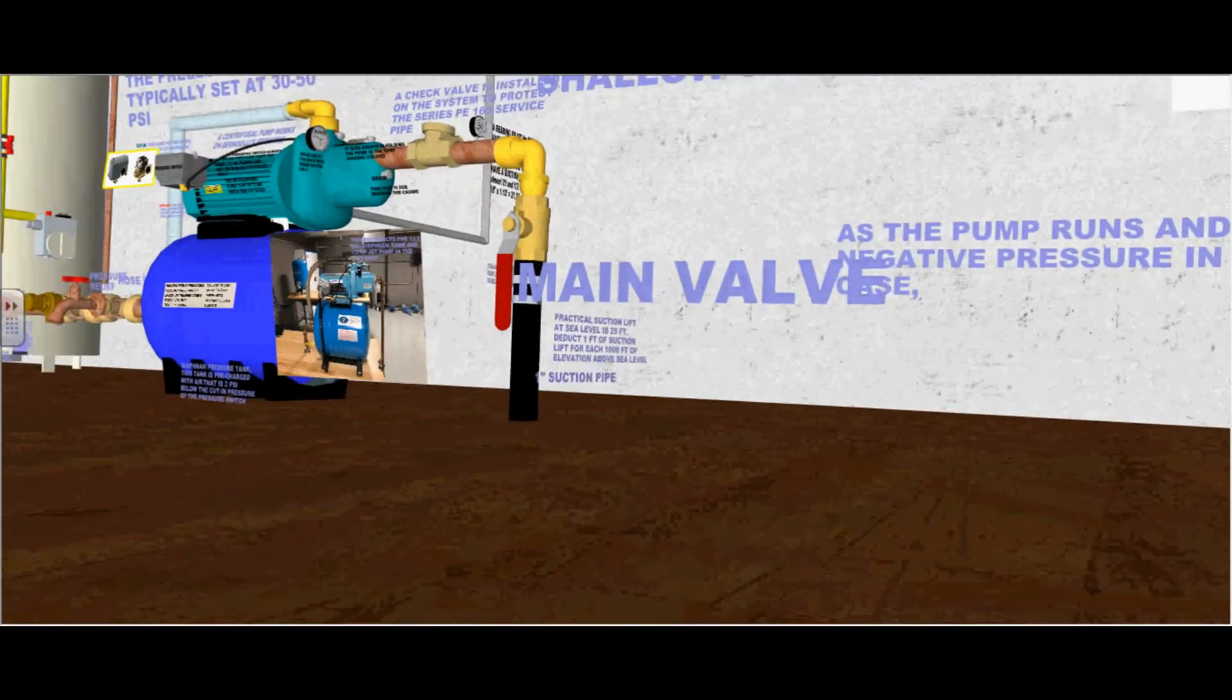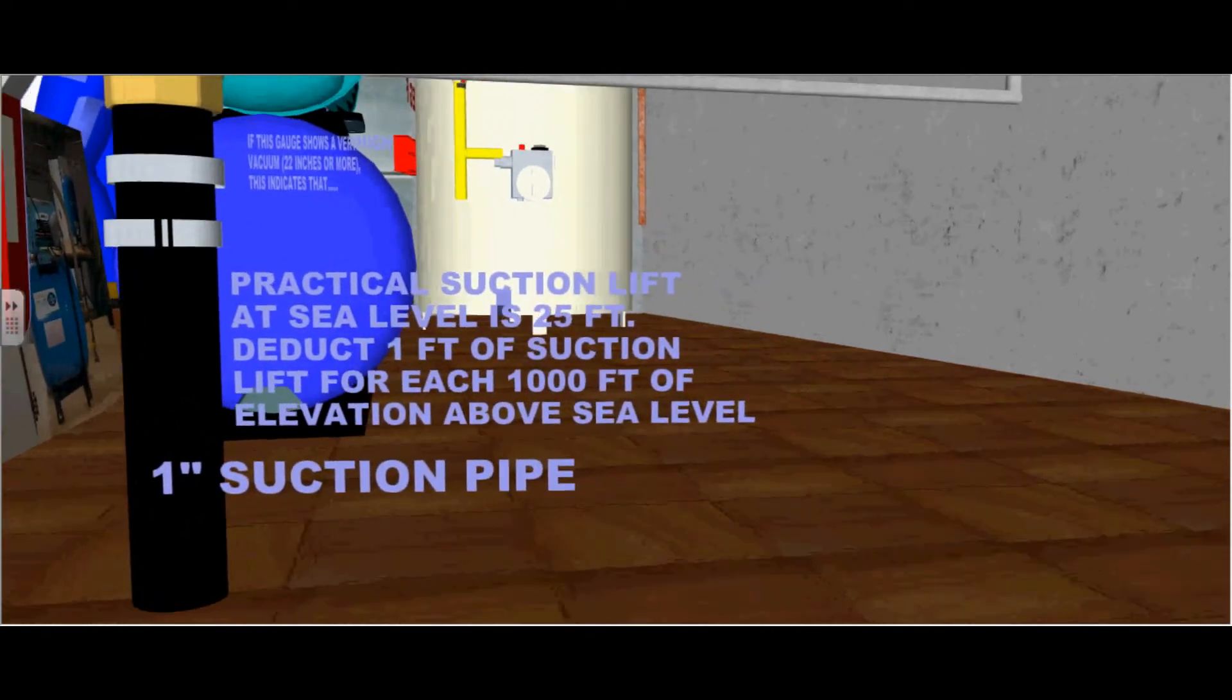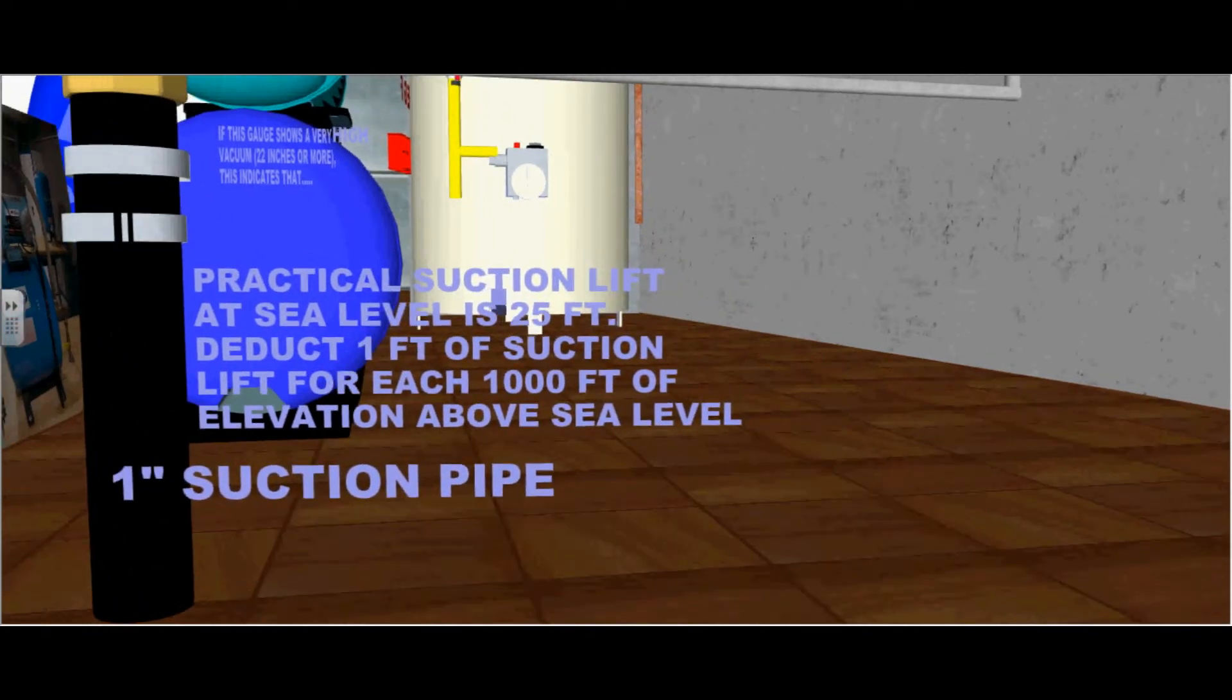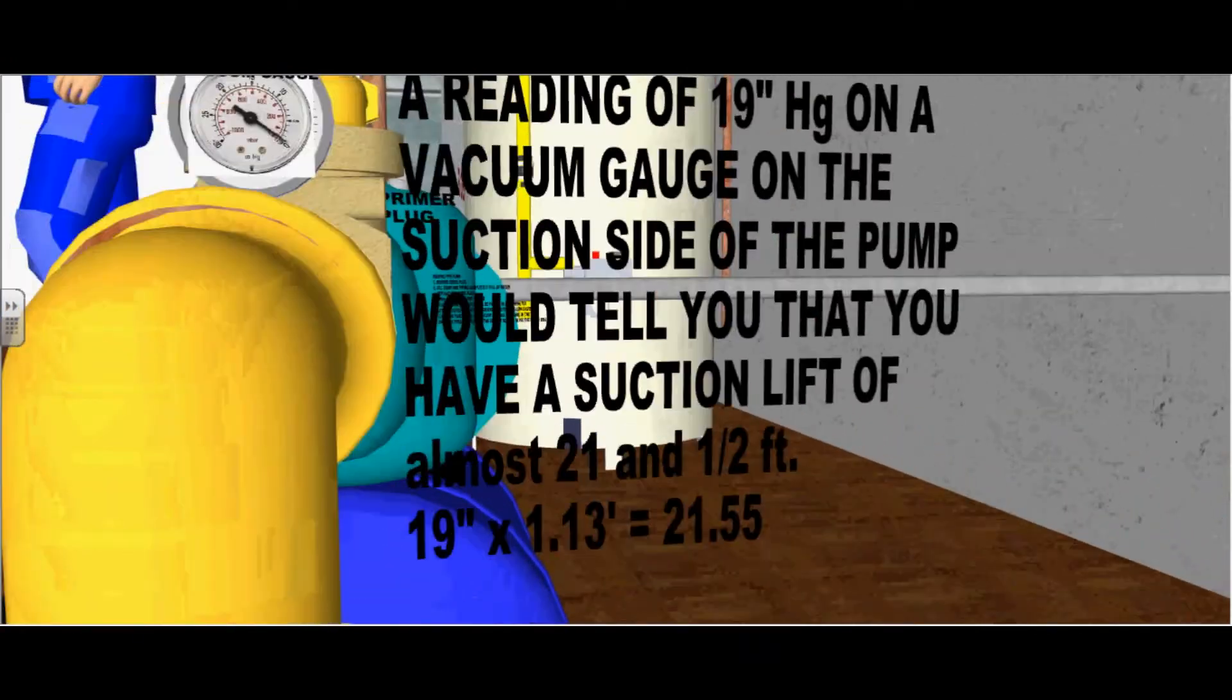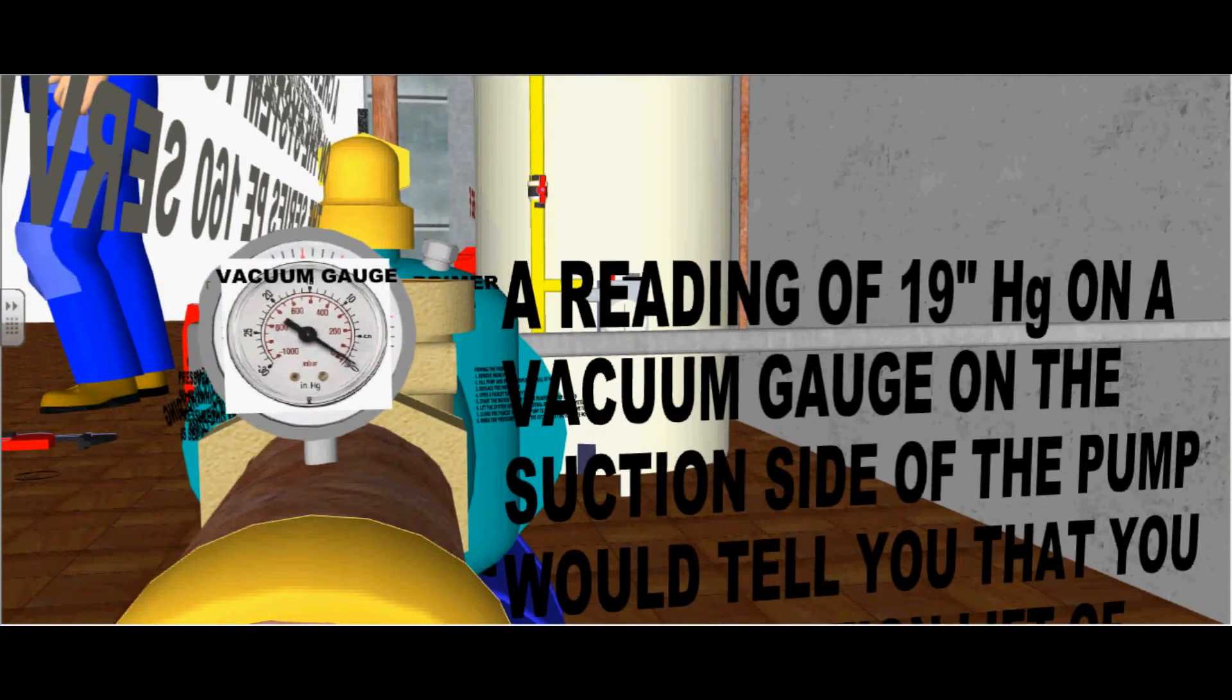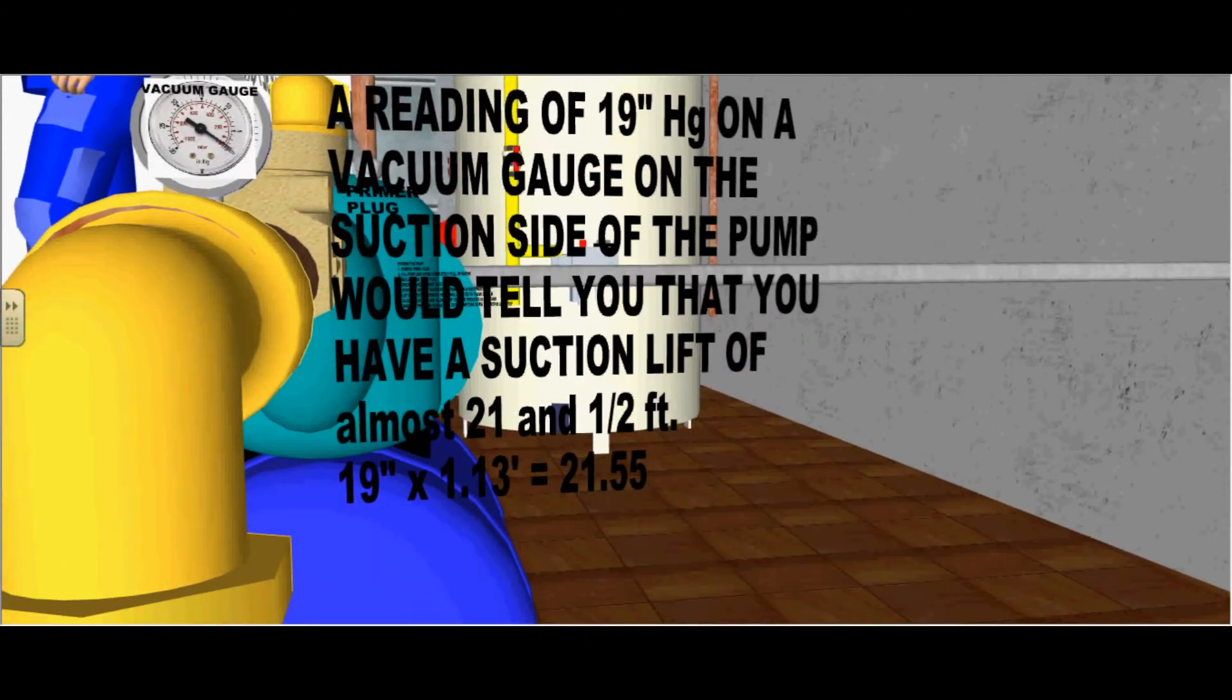This is the 1 inch drop pipe. Practical suction lift at sea level is 25 foot. Deduct 1 foot of suction lift for every 1000 foot of elevation above sea level. A reading of 19 inches mercury on the vacuum gauge on the suction side of the pump will tell you that you have a suction lift of almost 21.5 feet. 19 inches times 1.13 feet equals 21.55 feet.